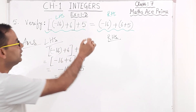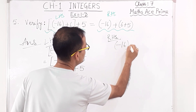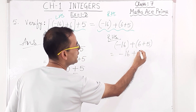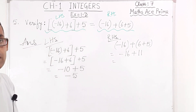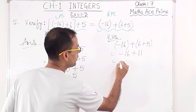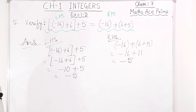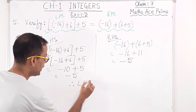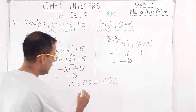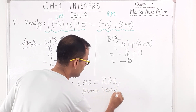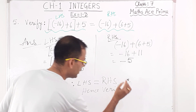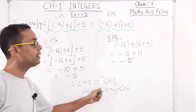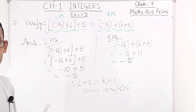Now the right hand side: minus 16 plus open bracket 6 plus 5 close bracket. Adding the bracket first: 6 plus 5 equals 11, so minus 16 plus 11. Different signs, so we subtract: minus 5. You can see left hand side and right hand side are both coming to minus 5. Therefore LHS equals RHS — hence verified. Left hand side is minus 5, right hand side is also minus 5, so hence verified.